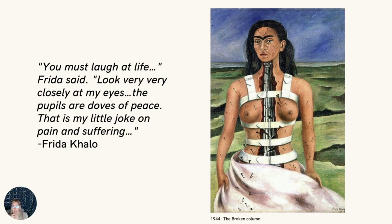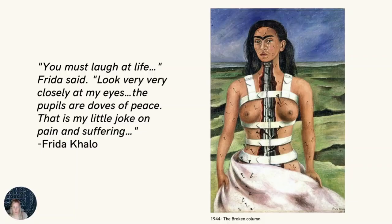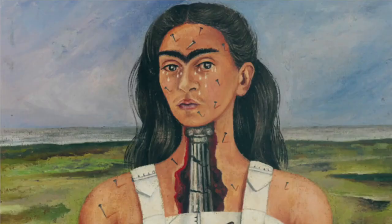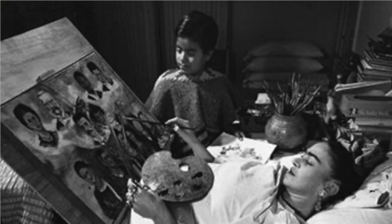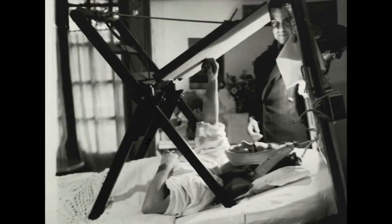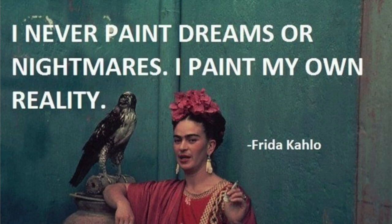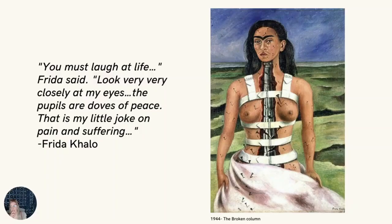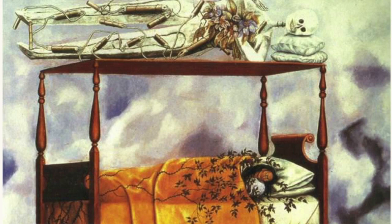Kahlo suffered many tragedies throughout her life, from having polio as a child to nearly dying in a bus accident as a teenager. This accident caused multiple fractures of her spine, collarbone, and ribs. She suffered a shattered pelvis, a broken foot, and a dislocated shoulder. While recovering in a full body cast, she began to focus heavily on painting herself. With a mirror above her bed, she would paint her own reality—something Kahlo always talked about. In her lifetime, she had 30 different operations to try to repair the damage caused by this accident.